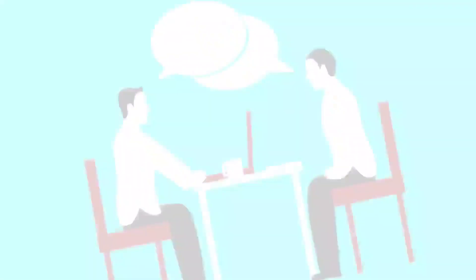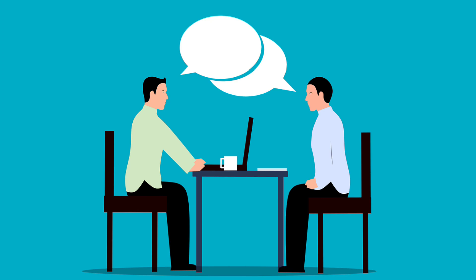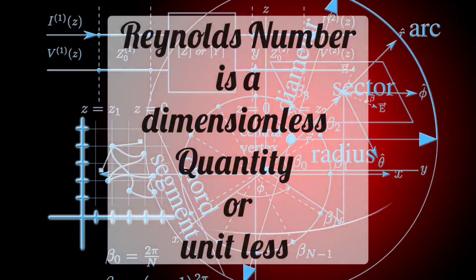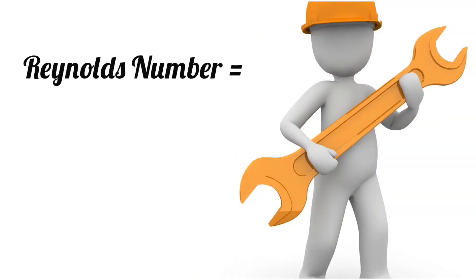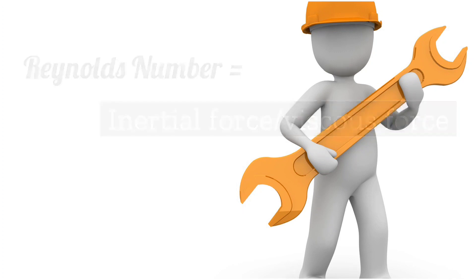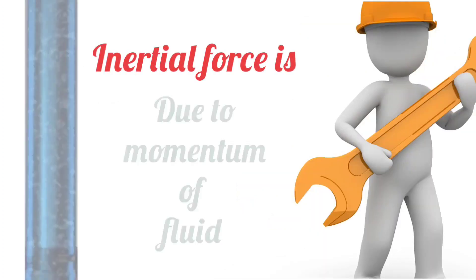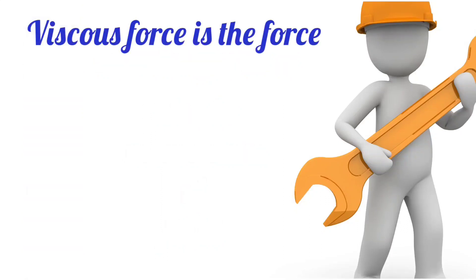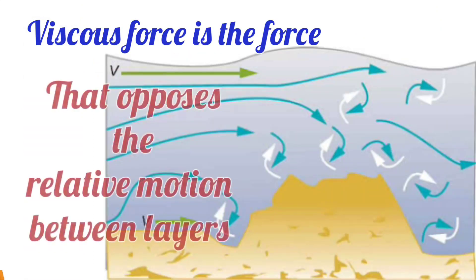Reynolds number is also often asked in interviews. Reynolds number is a dimensionless or unitless quantity, which is the ratio of inertial force and viscous force. Inertial force is the force due to the momentum of the fluid. Viscous force is the force that opposes the relative motion between the layers.